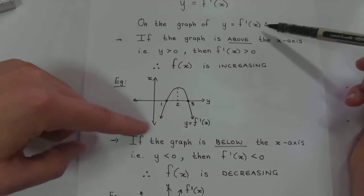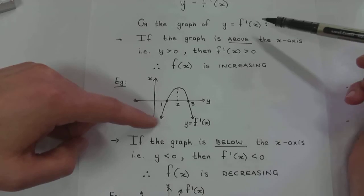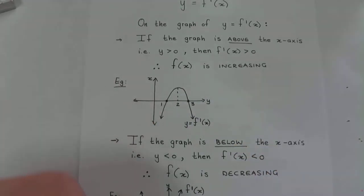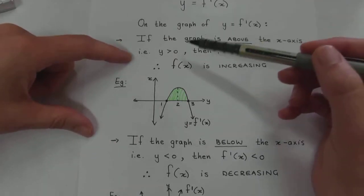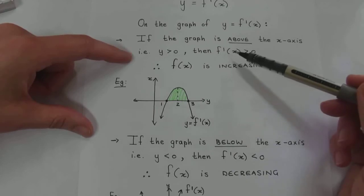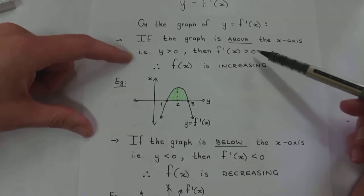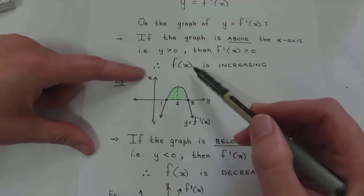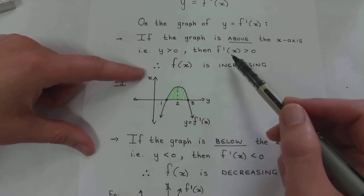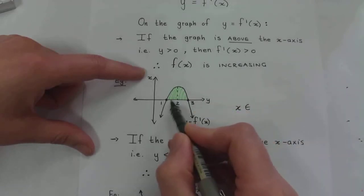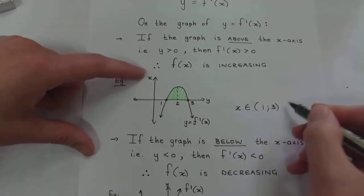This is not the graph of f(x) — this is the graph of the derivative. So if in this particular graph the graph is above the x-axis, then y is greater than zero. In this case, y indicates the first derivative, which means the first derivative is greater than zero, and that means f(x) is increasing. So in this particular example, f is increasing from one all the way to three.